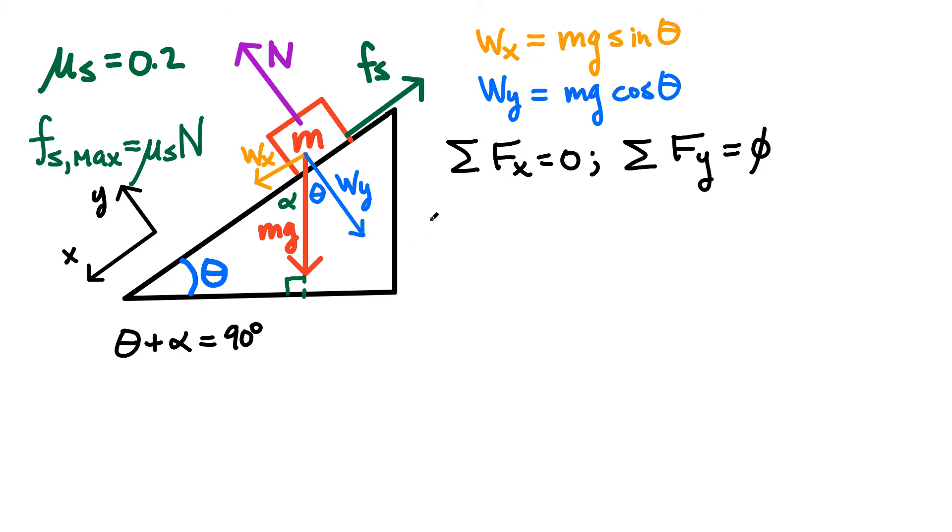Let's do the x direction first. In the x direction, there's two forces. I've got the weight acting down the ramp. That's in the positive direction. That's mg sine theta. And I've also got the force of friction acting opposite, minus the force of static friction acting up. This here has to be equal to zero. In the y direction, there's two forces. I've got the normal acting up, N, minus the weight acting down, mg cos theta, equals to zero.